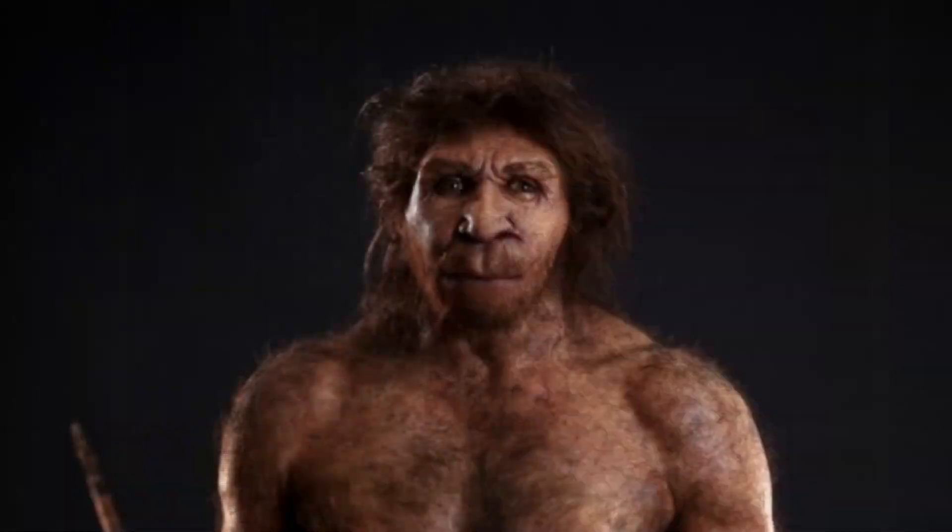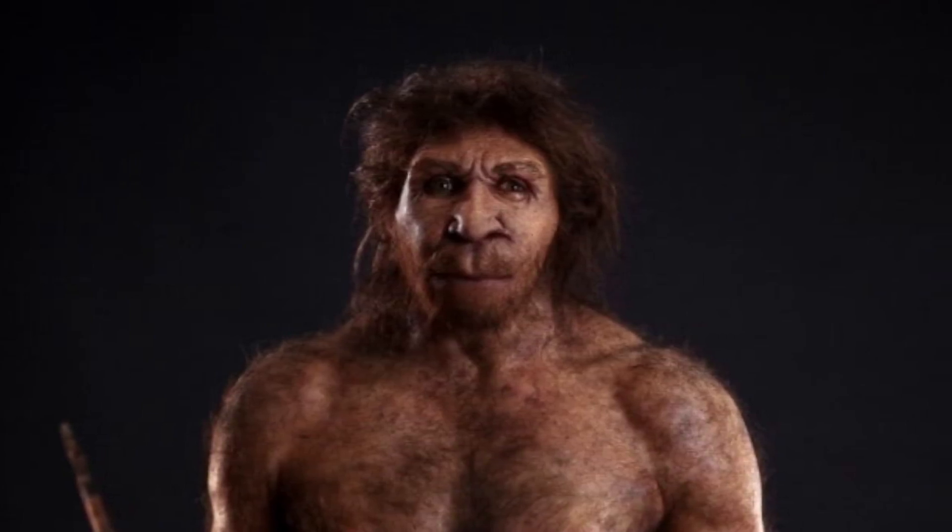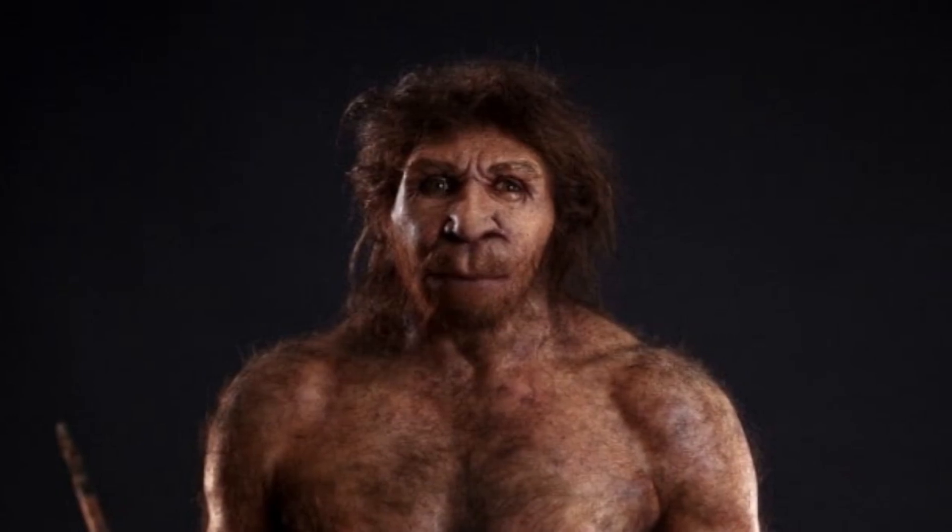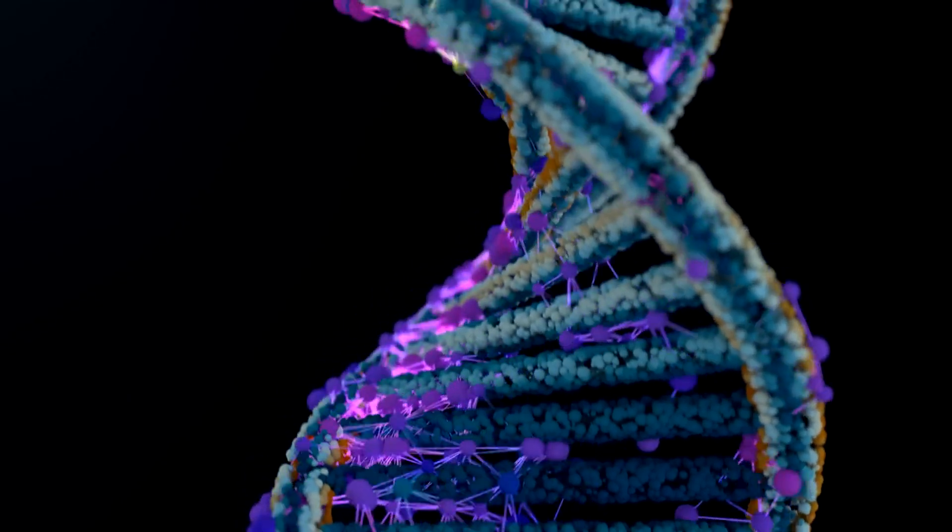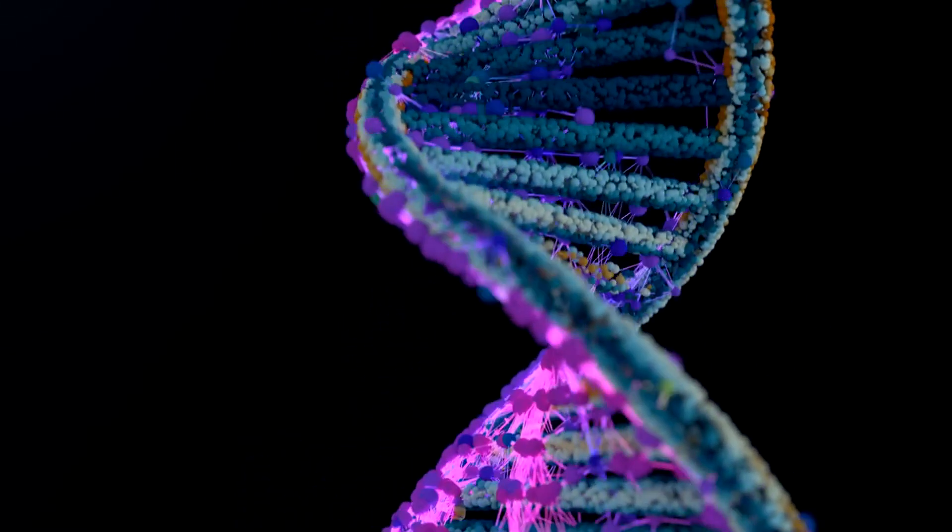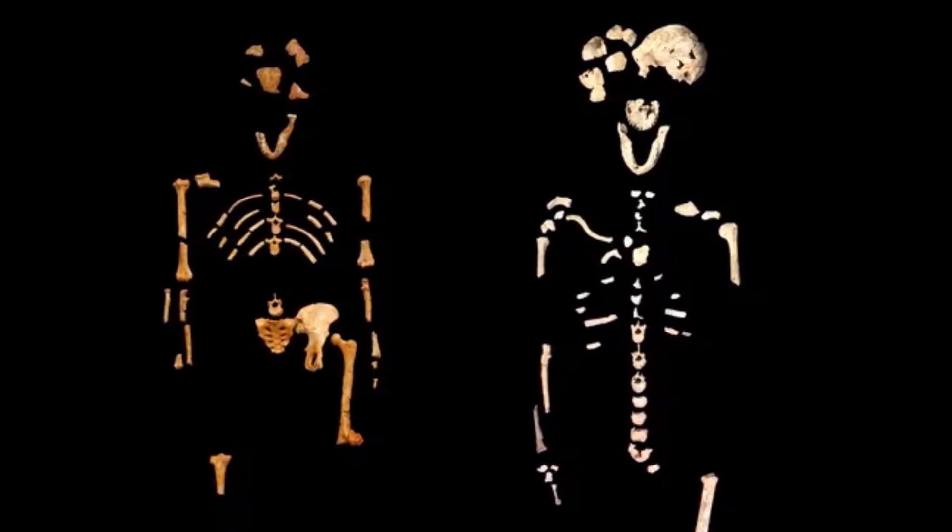A team then unearthed more fossils from the individual, a young boy, including a well-preserved skull. Sediba was described by Lee Berger and colleagues in 2010. The species represents a transitionary phase between the genus Australopithecus and the genus Homo, with some traits of the older primate group but a style of walking that resembled modern humans.